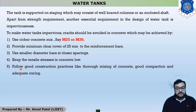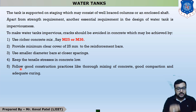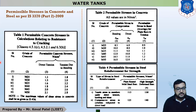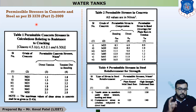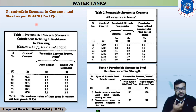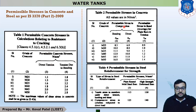Now we move to five important permissible stresses used while designing any water tank. The permissible stresses of concrete and steel are given in IS 3370 Part 2, 2009. The stress word is denoted by sigma.